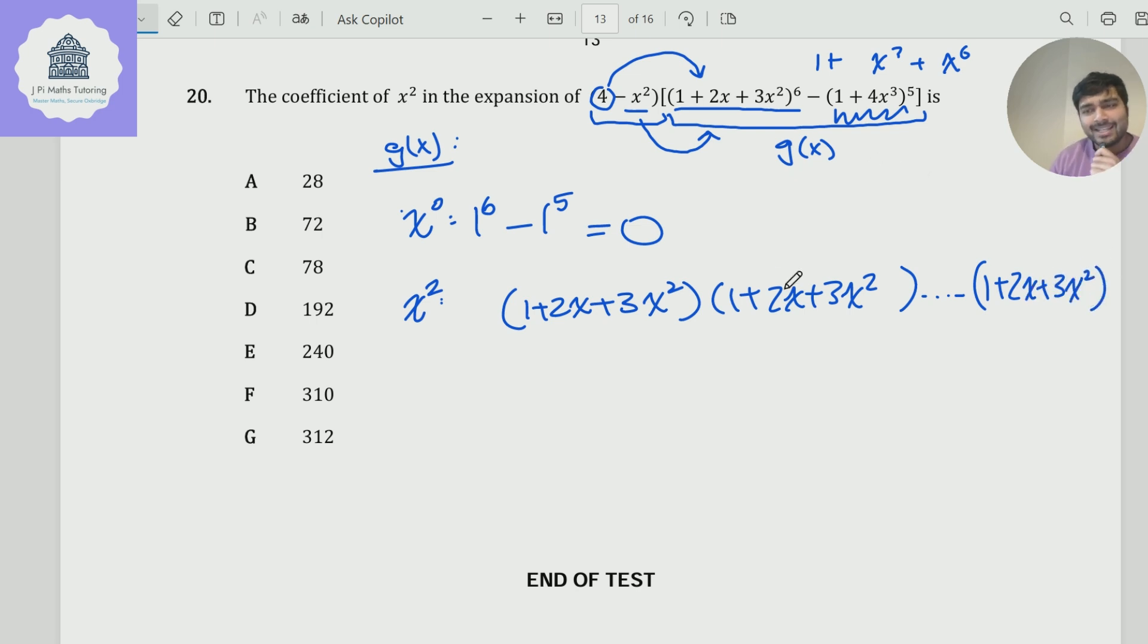Now, how can I get an x² when I multiply this out? Well, let's think about how we multiply out brackets - we're just going to choose one thing from each bracket. So how could I get an x²? Maybe I can choose the 3x² here and then just choose ones from all the other brackets. And that would obviously give me a coefficient of 3x². But how many ways are there to do that? Well, there's six choose one ways of doing that.